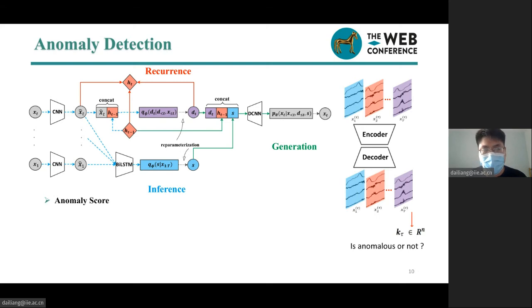In anomaly detection, the most important thing is to specify the anomaly score of each observation. Here we prefer the log-likelihood output, which denotes how likely an observation is normal. Since the likelihood is a Gaussian and can be factorized, we use the score shown here as the final anomaly score of the observation.